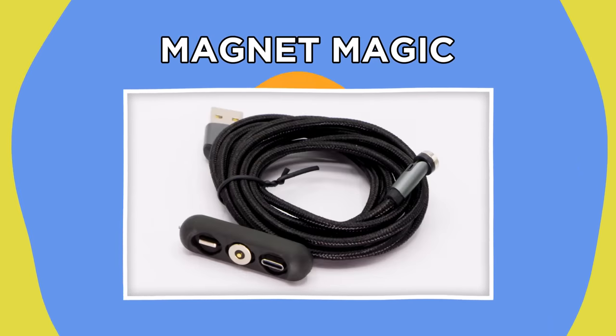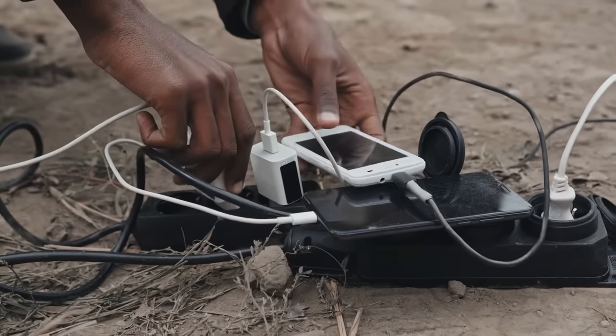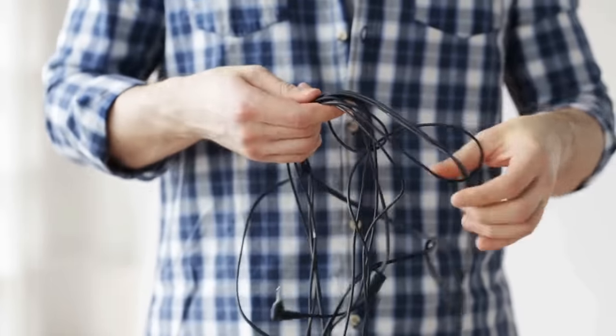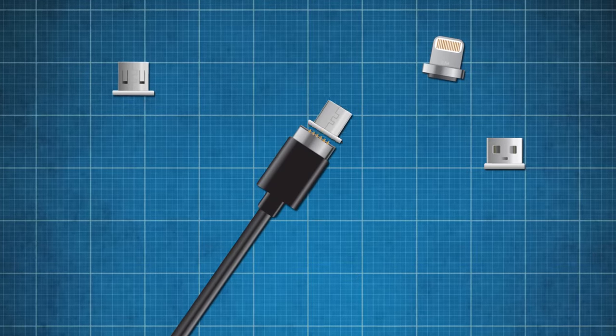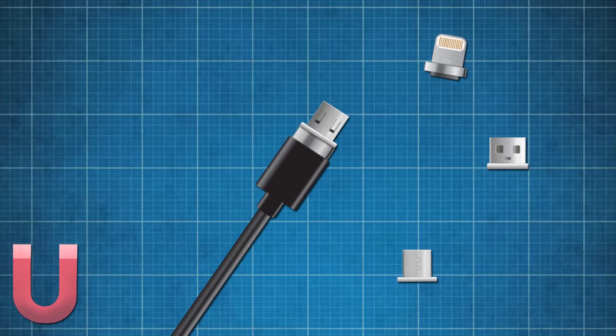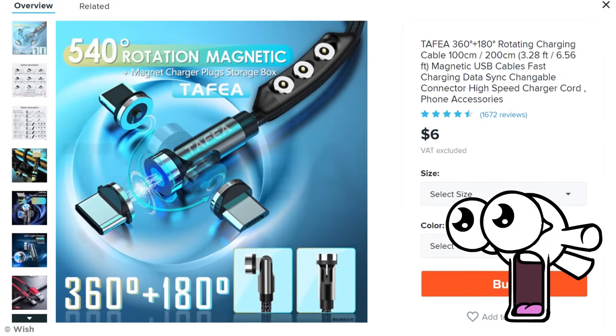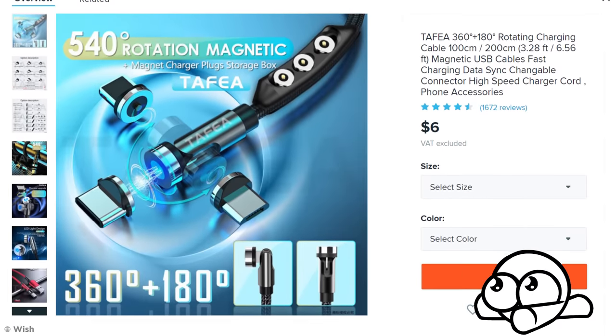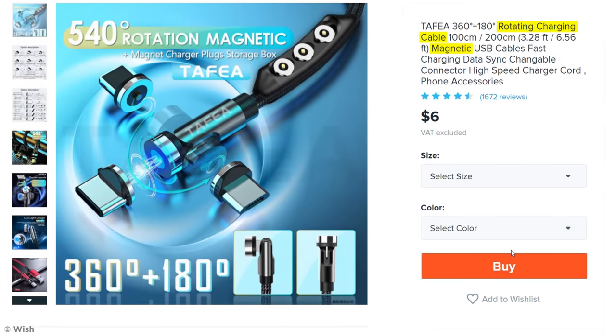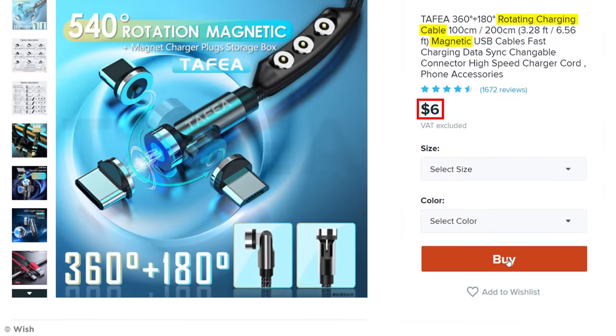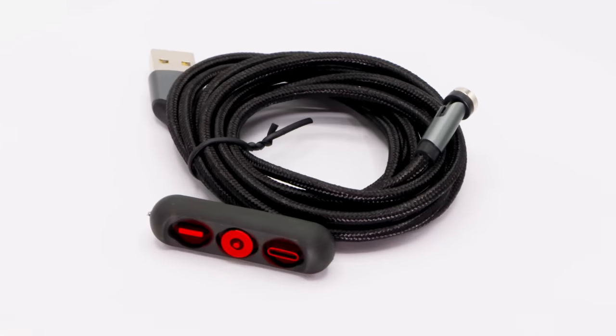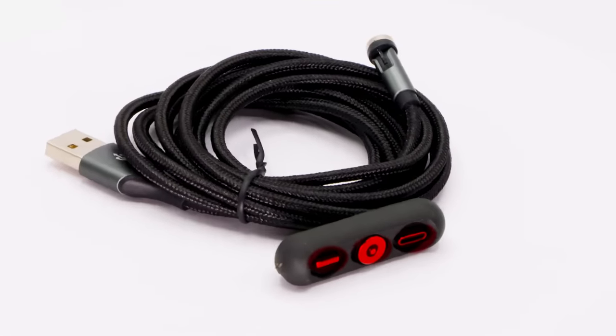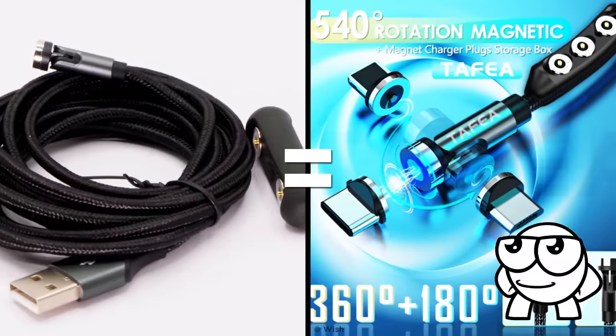Magnet Magic. With every electronic item I own having a different type of charging port, I'm always tangled up in hundreds of different cables. If only there was one cable that could, I don't know, magnetically connect to a bunch of different heads. Wait, did Wish just answer my prayers with this magnetic rotating charging cable? And for six dollars? Sold. I've got to admit, I was really hopeful about this one. So when the cable and three separate charging plugs eventually arrived exactly as described, I was very optimistic.